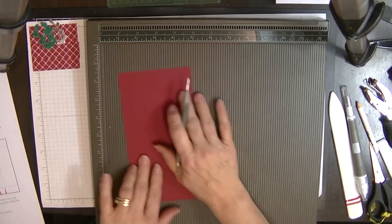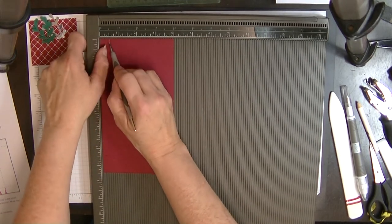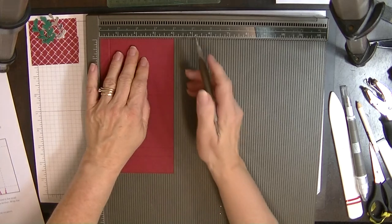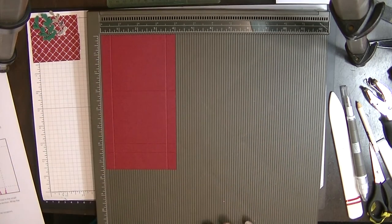I'm then going to turn it onto the short side and we're going to score this at a half an inch and three and a half inches. And that's all the scoring we're going to do.